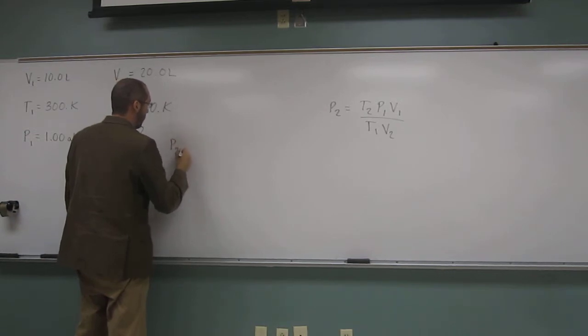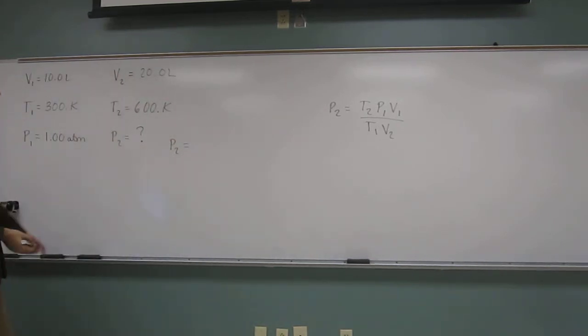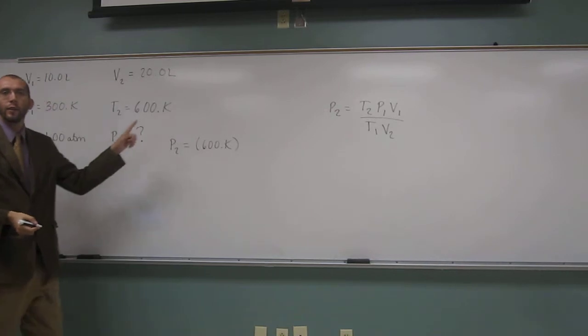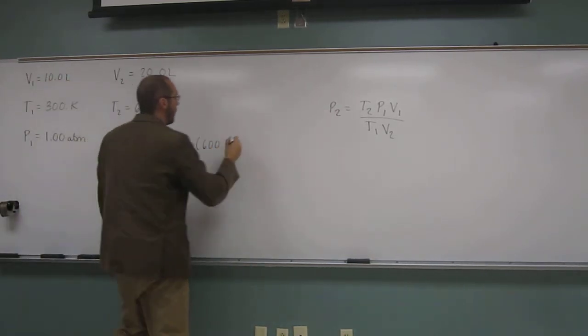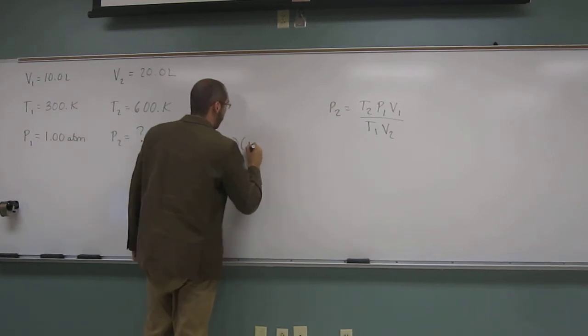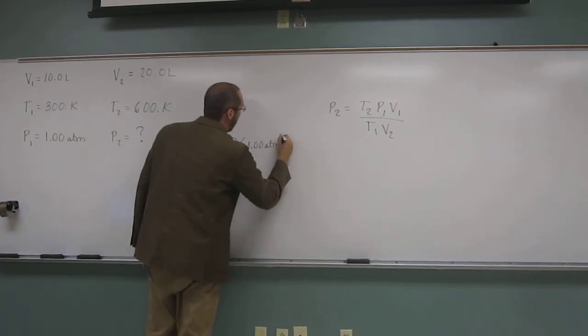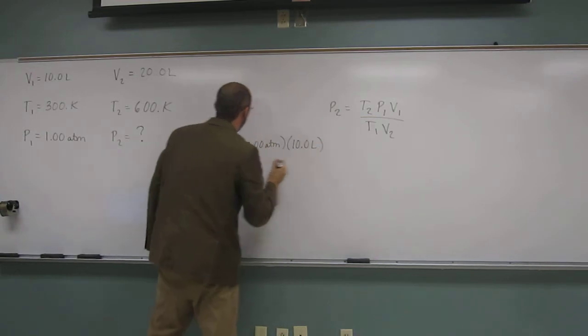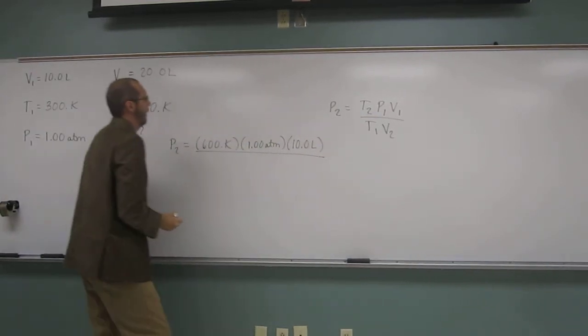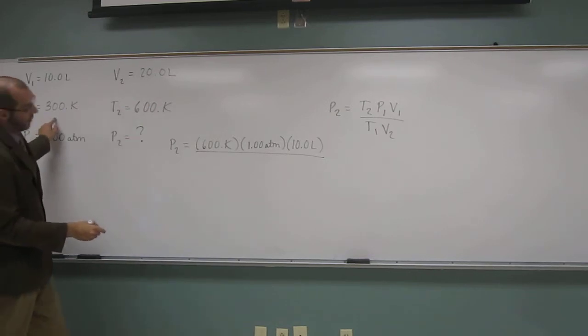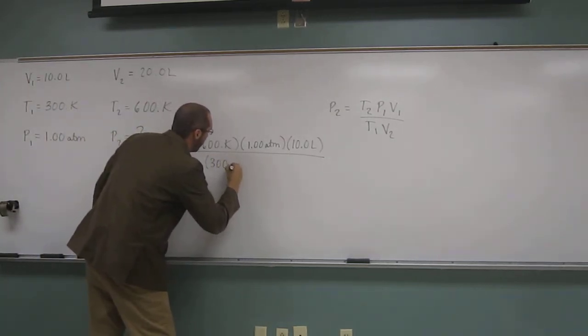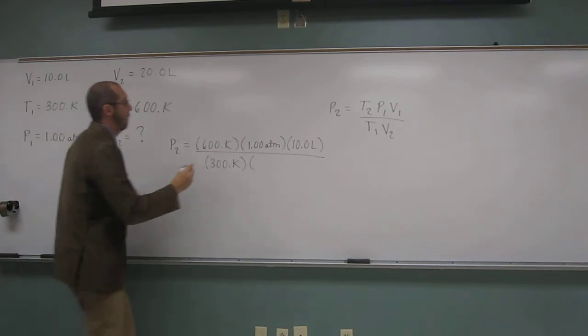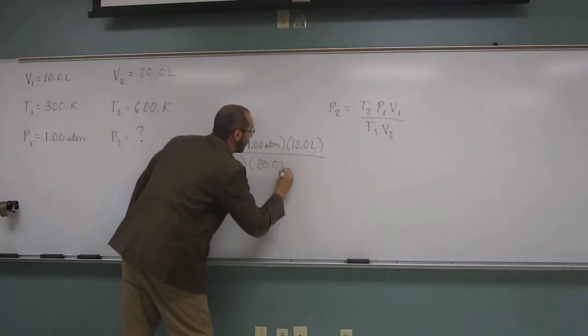Okay. So P2 equals, well, let's just plug in. So we've got T2, which is 600 Kelvin. And we're already in Kelvin, so we don't have to change our temperature. P1, 1.00 atm, and V1, 10.0 liters, divided by T1, which is 300 Kelvin, times V2, which is 20.0 liters, like that.